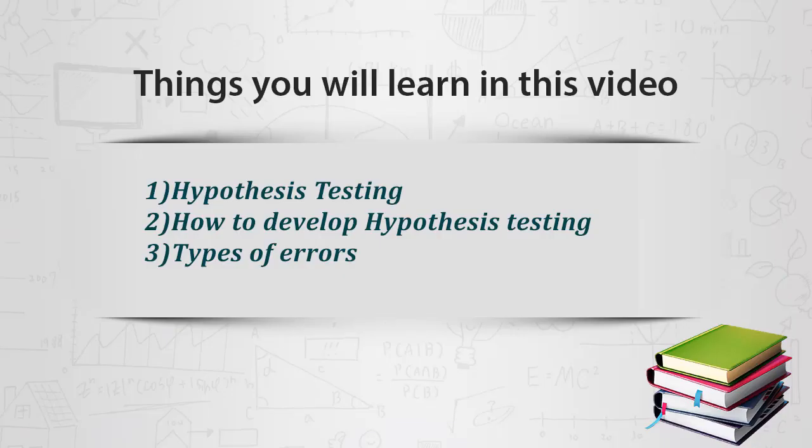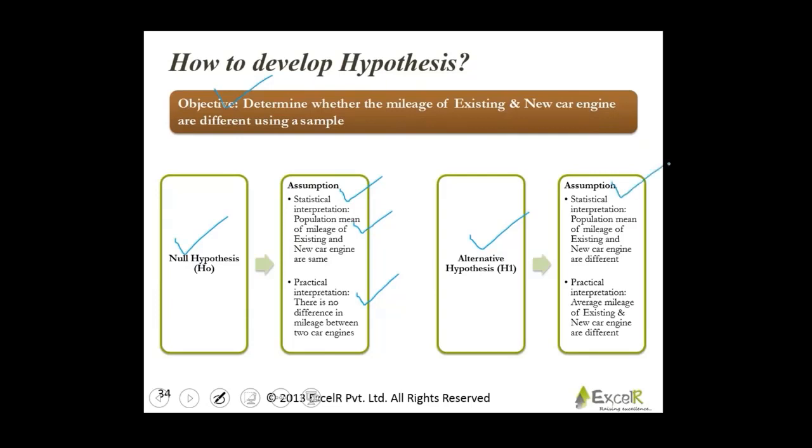What is the statistical interpretation of this? Population mean of mileage of existing and new car engine are different. What is the practical interpretation? It says average mileage of existing and new car engine are different, are not the same.